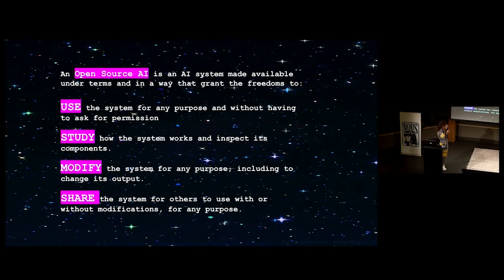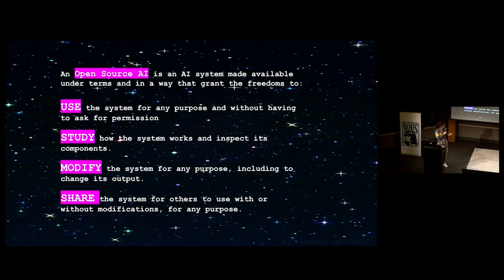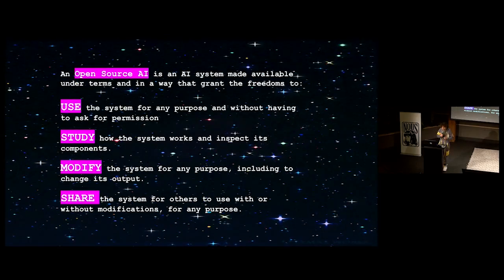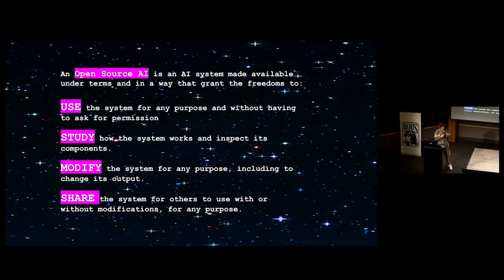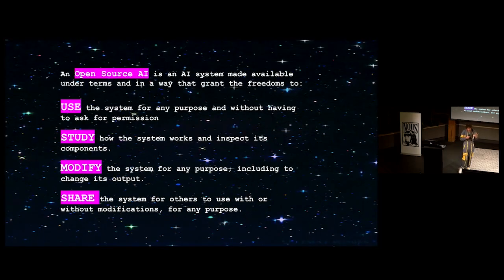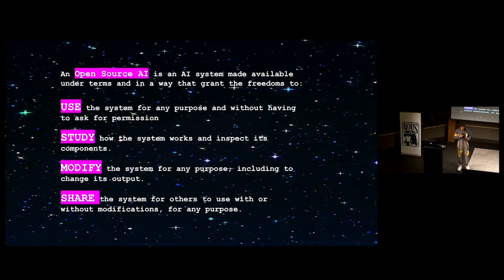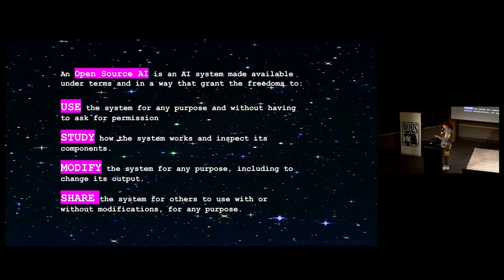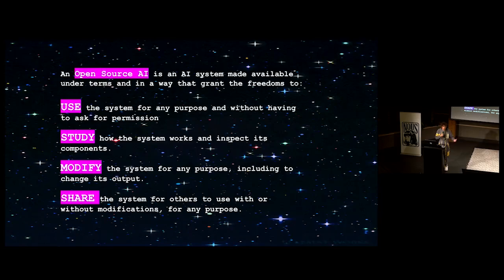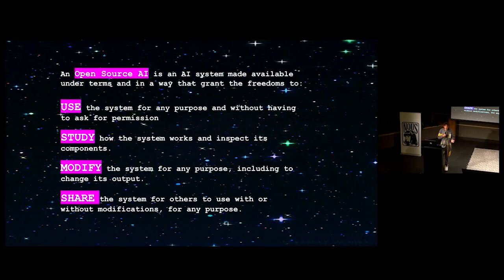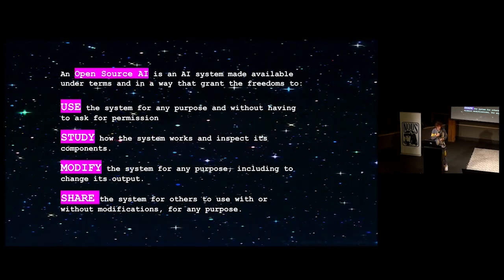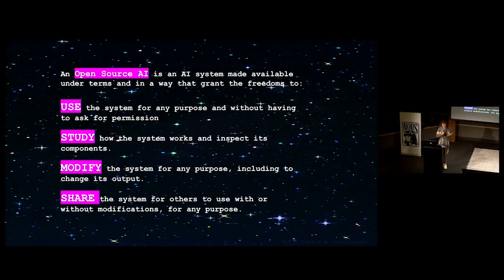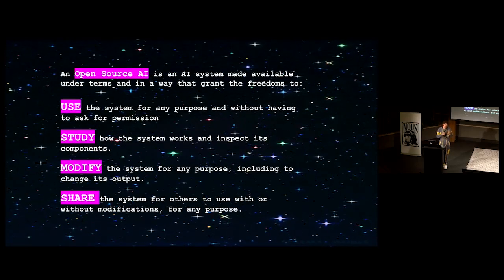There are many different kinds of open source models. An open source model is an AI system that gives people the freedoms to use the system, to study it, to understand it for interpretability, to modify it — a license to look at the model, to mess with it, to further pre-train it, to fine-tune it, to use it for any purposes you see fit, to fuse it and make multimodal stuff, and to share it with others — no limitations on distribution and what you can use these models for.